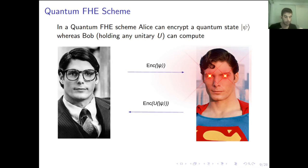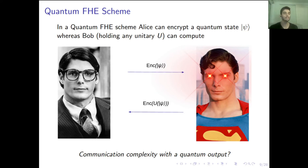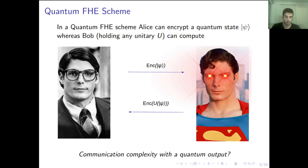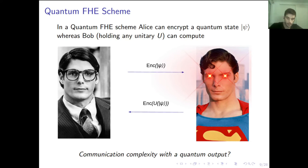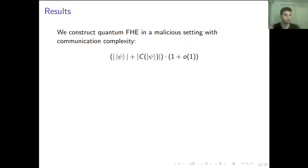The more interesting case is when we have a quantum output, because for classical output maybe we can use classical techniques to store it optimally and get rate 1. But if we have a quantum output, rate 1 is not known for the quantum setting. So this is exactly the question we pose: can we get a rate-1 secure quantum FHE? And the result is yes — that's exactly what we construct.